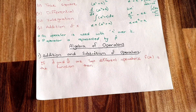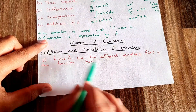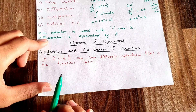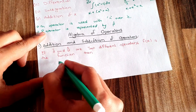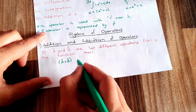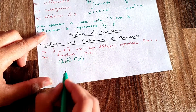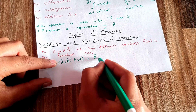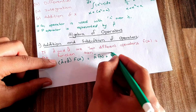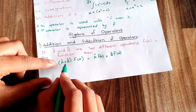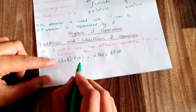If I have two operators A and B, and f(x) is the function on which these operators are applied, then the operator (A + B) applied on f(x) gives: A applied to f(x) plus B applied to f(x). So (A+B)f(x) = Af(x) + Bf(x). This is how two operators being added should be applied on a function.